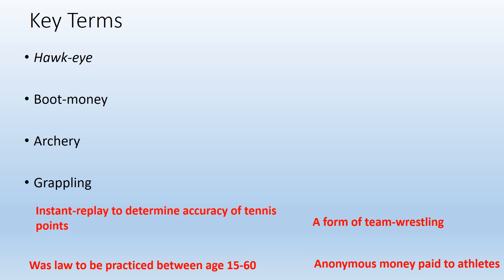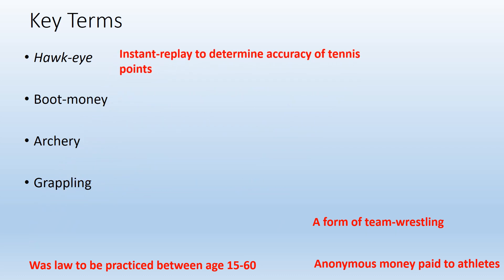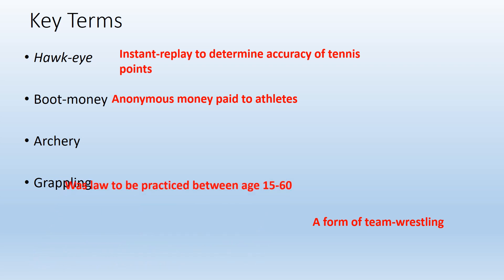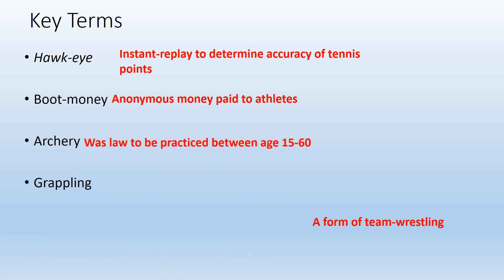Hawkeye is an instant replay service used to determine the accuracy of points in tennis. It's like a video replay that can show exactly where the ball lands, but it actually predicts where the ball is going to land before it lands there. It's called Hawkeye because hawks are famous for having extremely good vision. Boot money is under-the-table or illegal payments made to athletes, often anonymously. Archery was a law to be practiced between the ages of 50 and 60. And grappling is a form of team wrestling.